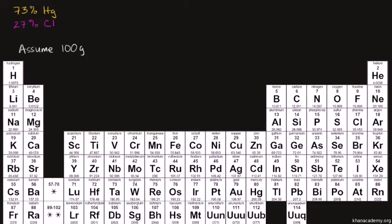And if I assume that, that means that the 73% that is mercury is going to be 73 grams and the 27% that is chlorine is going to be 27 grams of chlorine. Let me make it clear, this is mercury, and this is chlorine.